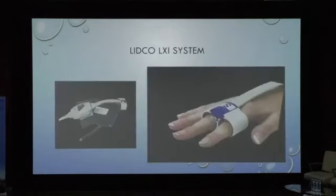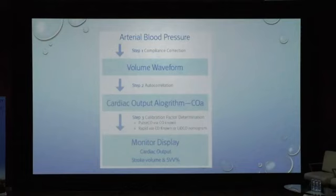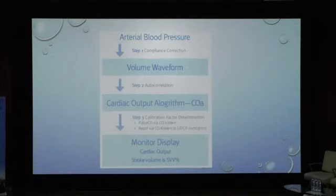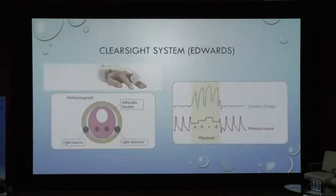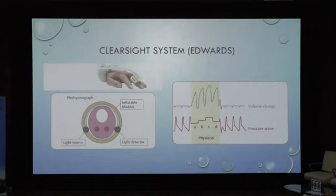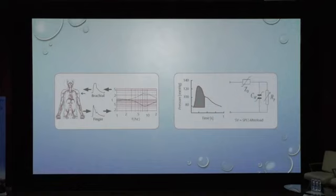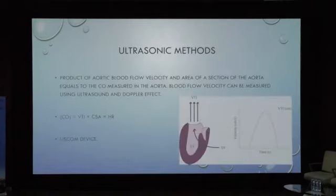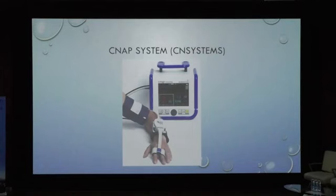Newer methods include the LiDCO LXi system, which uses applanation tonometry. It applies pressure, performs compliance correction, waveform correlation, autocorrelation, and calibrates through the PulseCO algorithm to derive cardiac output and variation. Similar systems include the ClearSight system by Edwards, which uses an inflatable bladder with photoplethysmography, tracing from brachial to finger. The CNAP system from Europe also follows a similar approach. These are essentially plug-and-play devices.